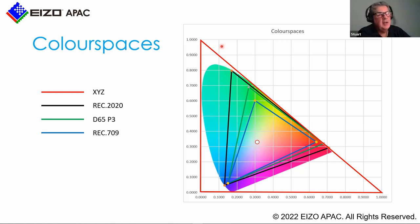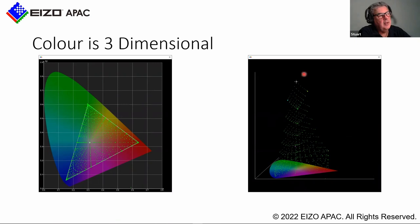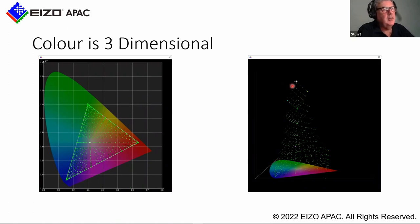It's important to understand that color is three-dimensional. This calibration verification of a CG3146 in Rec.709 shows green dots meaning those colors are less than Delta E 2000 of 1 — totally imperceptible. Calibration reports include the entire 3D color volume, from luminance through to black as well as the entire color gamut. The CG3146 across that entire color gamut, from black through to peak white, has Delta E errors less than 1. That's a 1000-patch verification.